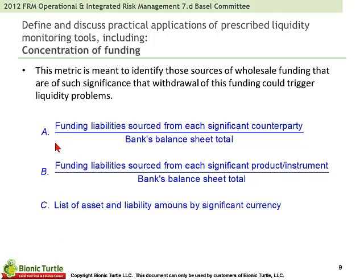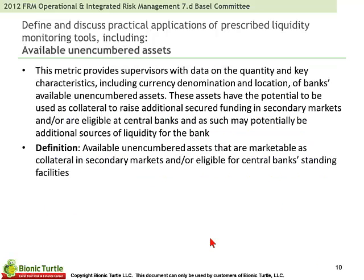Concentration of funding includes: funding liabilities sourced from each significant counterparty in relation to the bank's balance sheet total; funding liabilities sourced from each significant product or instrument as a share of the bank's total balance sheet; and a list of assets and liability amounts by significant currency. Available unencumbered assets is another monitoring tool that provides supervisors with data on the quality and key characteristics of a bank's available unencumbered assets. These assets have the potential to be used as collateral to raise additional secured funding in secured markets and may be eligible at central banks, making them potential additional sources of liquidity.